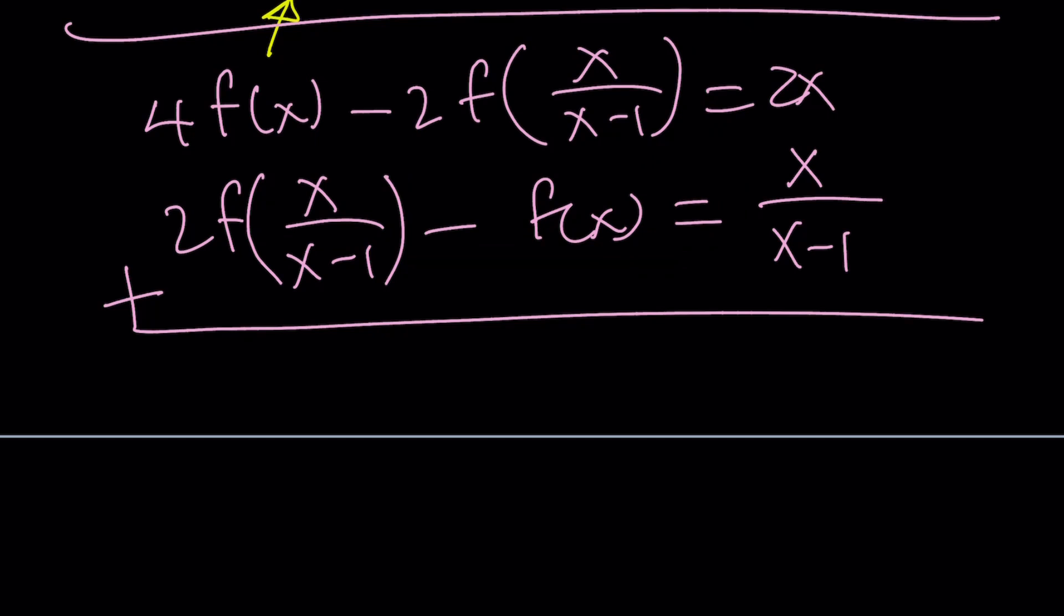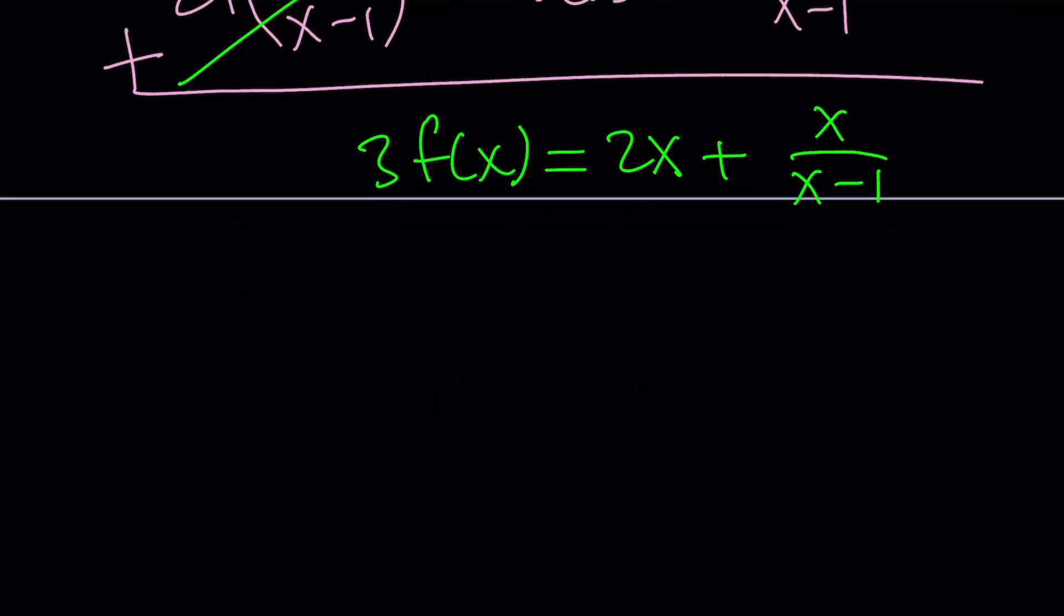And that's going to do the trick. So here, 2 times f of x over x minus 1 is going to cancel out, leaving us with 4 times f of x minus f of x, which is 3 times f of x. And on the right-hand side, of course we're adding, so it's going to look like this: 2x plus x over x minus 1.